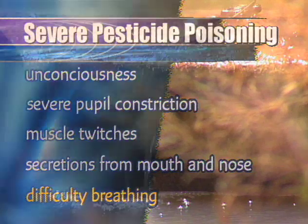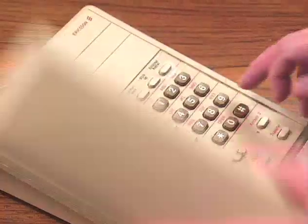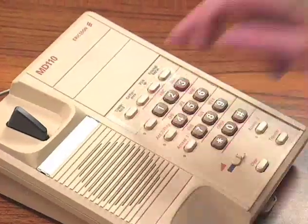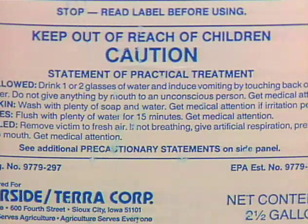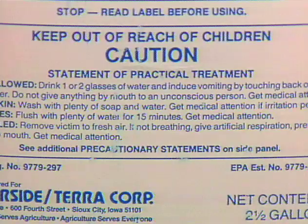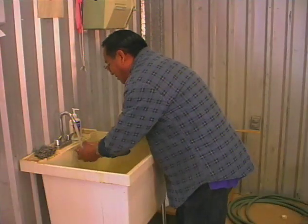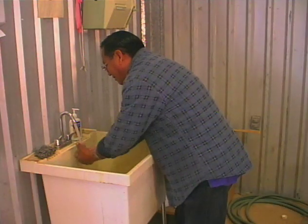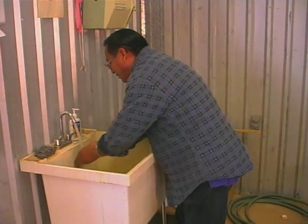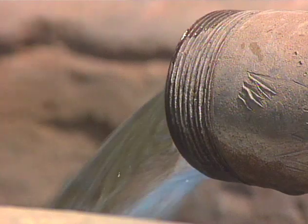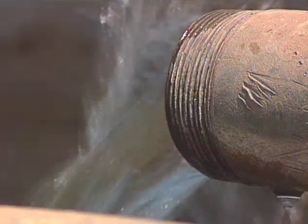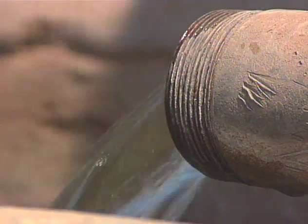If pesticide poisoning occurs, call the paramedics immediately. Then read the label for any first aid information. Pesticide labels contain practical treatment information. If skin contact has been made, remove the pesticide quickly. If the pesticide has been splashed in the mouth or swallowed, rinse the mouth out immediately.